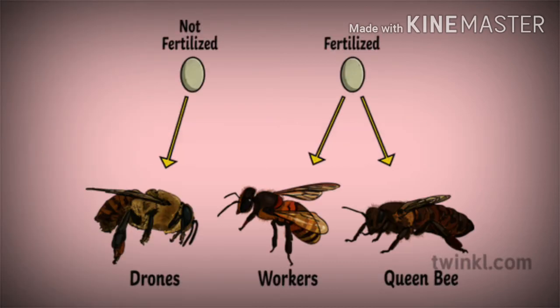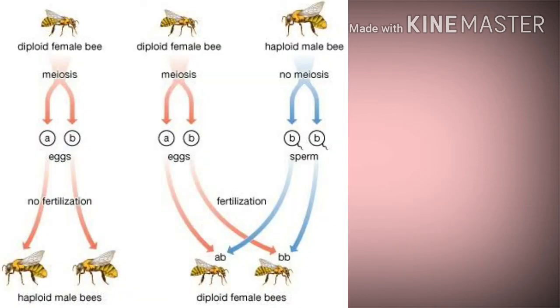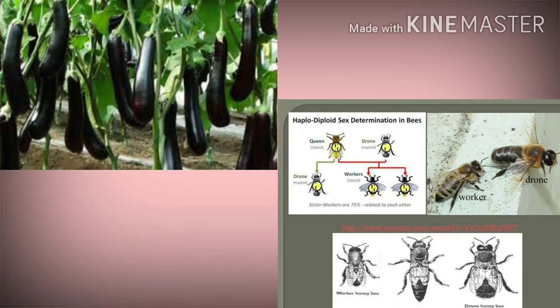Coming to parthenogenesis, the process of development of young ones from an unfertilized ovum is called parthenogenesis. Young ones produced by this method are generally weak. It occurs in both plants and animals. Examples include honeybee and Solanum nigrum.